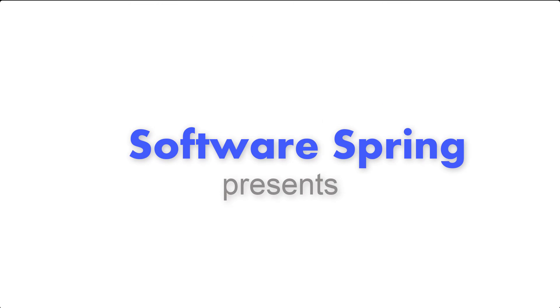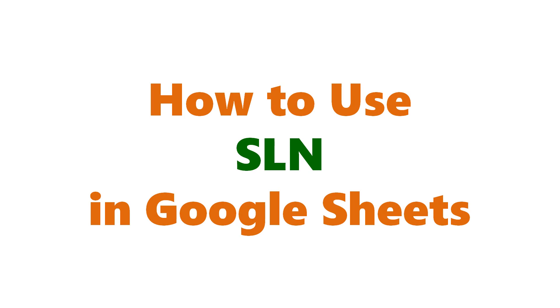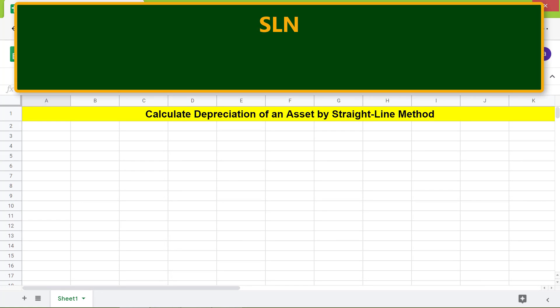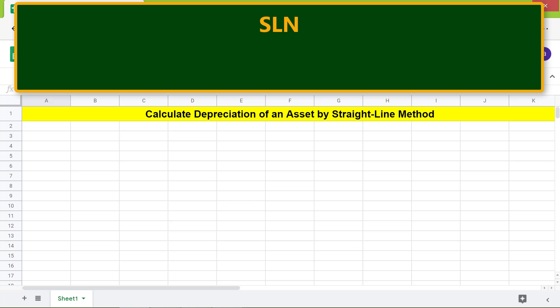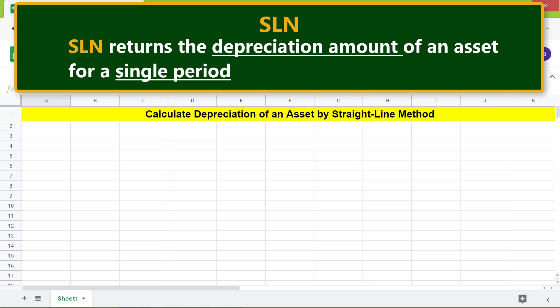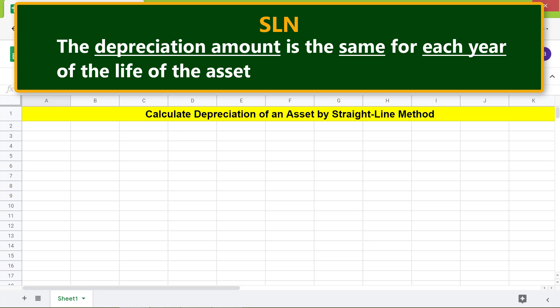Welcome to the tutorial on the SLN function. SLN stands for straight line. SLN uses the straight line method to calculate the depreciation of an asset. SLN returns the depreciation amount of an asset for a single period, and the depreciation amount is the same for each year of the life of the asset.